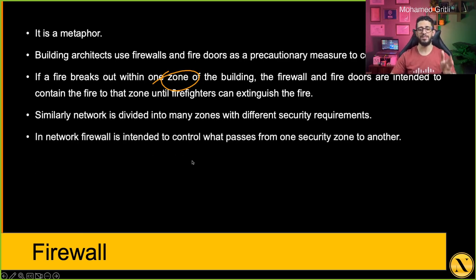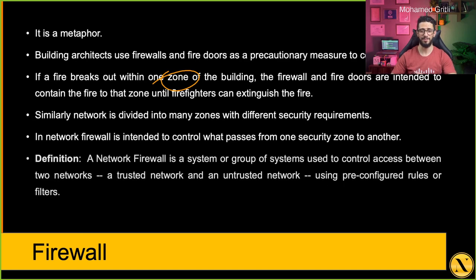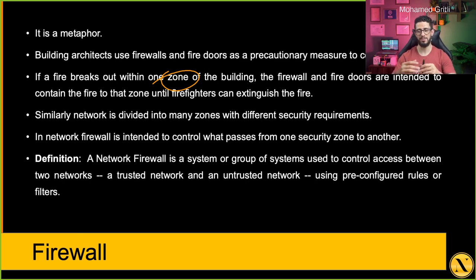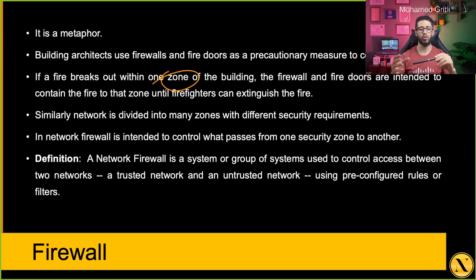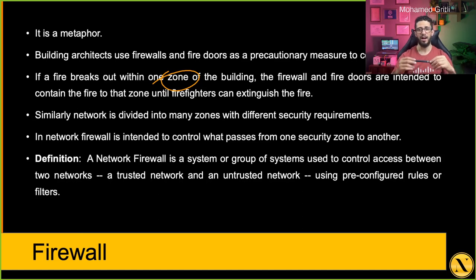A network firewall is a system or group of systems — we can have multiple firewalls for increased throughput and redundancy, which we'll discuss later. A firewall works based on pre-configured rules or filters.